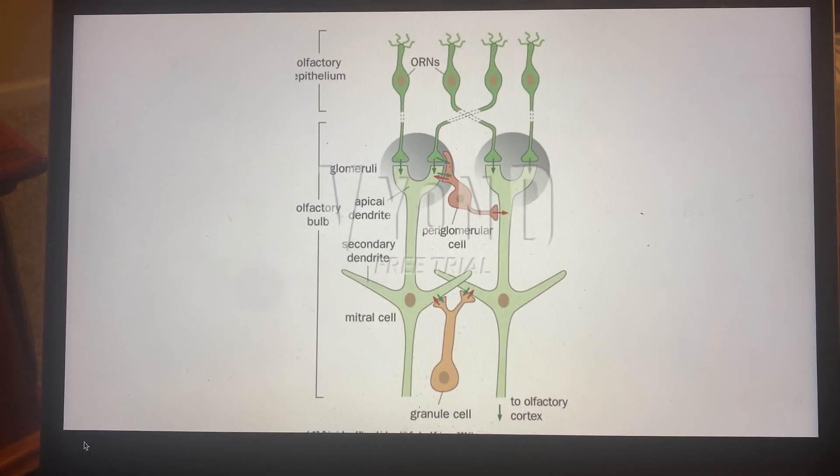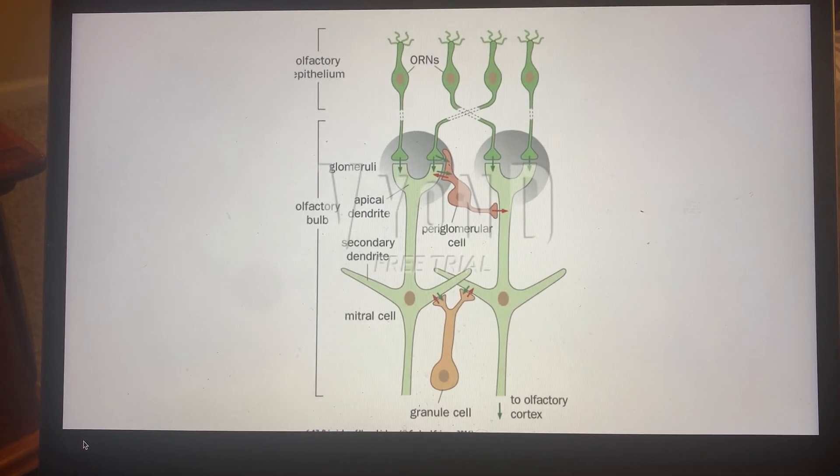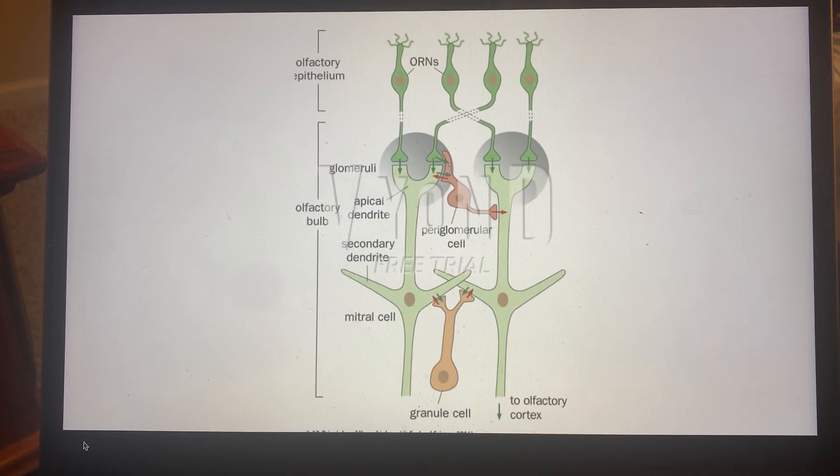This is just a general overview of lateral inhibition and how it impacts the olfactory system, and a little snippet on how it impacts the visual system. Thank you.